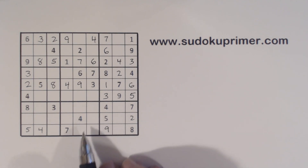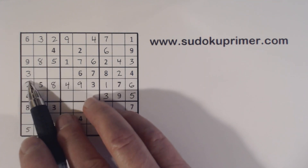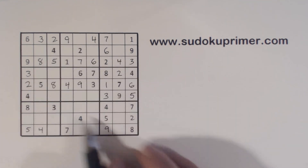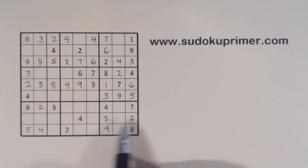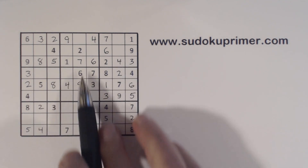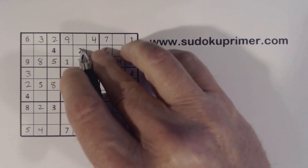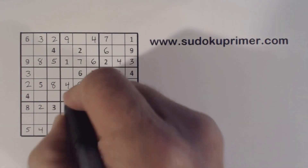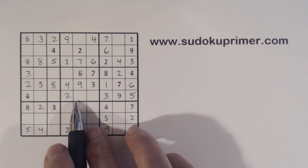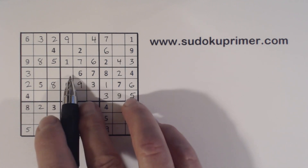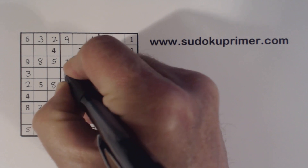And now we've got 2, 2, 2 — so that's a 2 right there. Now we've got 2, 2, 2 there, so that's a 2. And 2, 2, 2 there because of that 2. This is a 5 — we've got 5, 5, so that's a 5 right there.